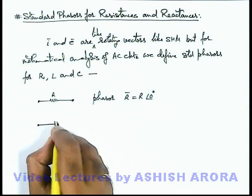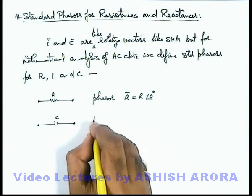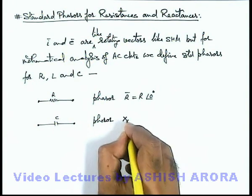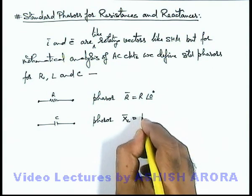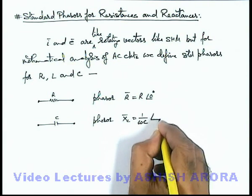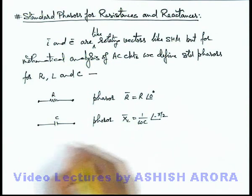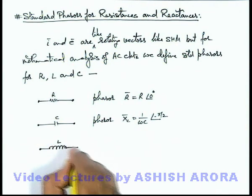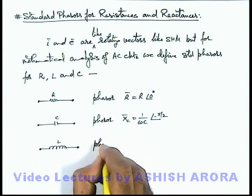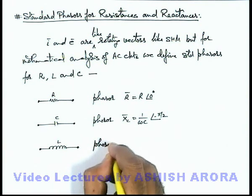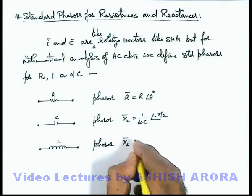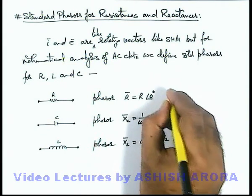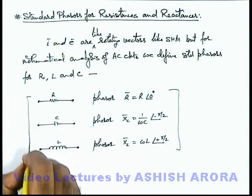If we are given a capacitor, then its phasor for AC circuit is written as X_C phasor, and it is given as 1 by omega C angle minus pi by 2. Similarly for an inductor, the phasor which is for inductive reactance is written as omega L angle plus pi by 2.